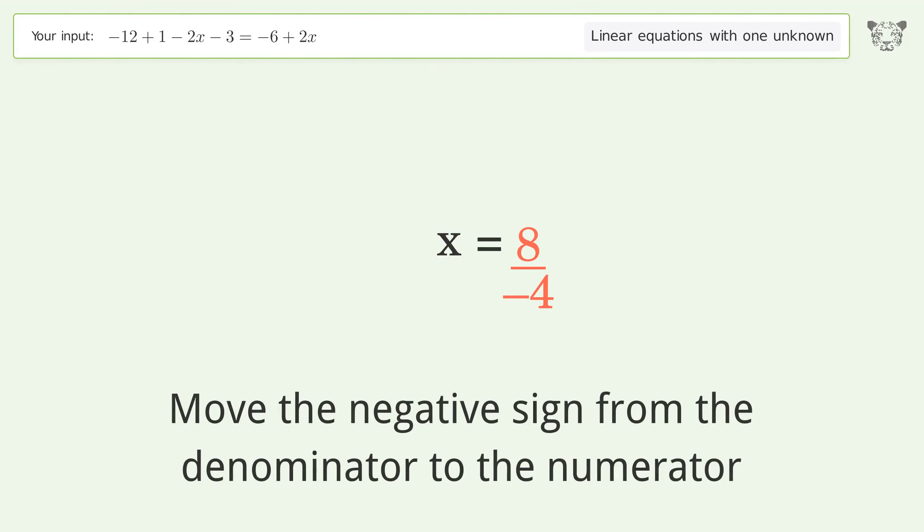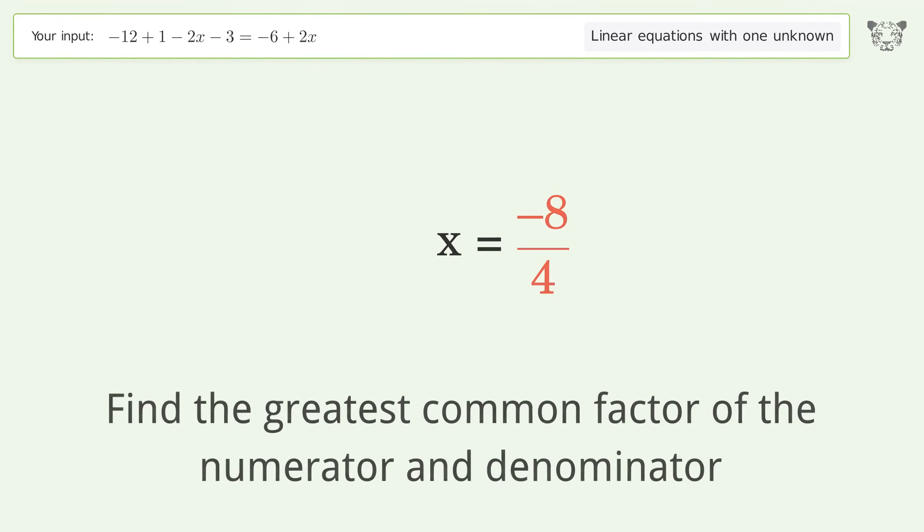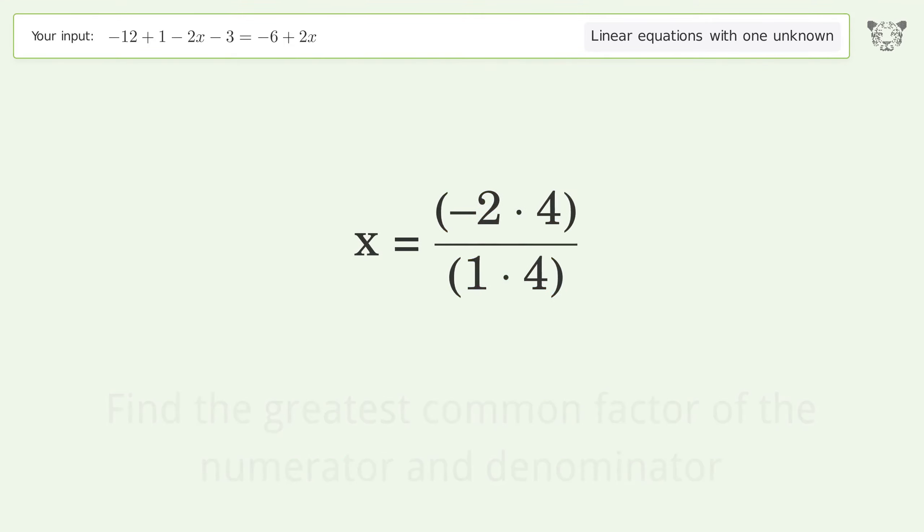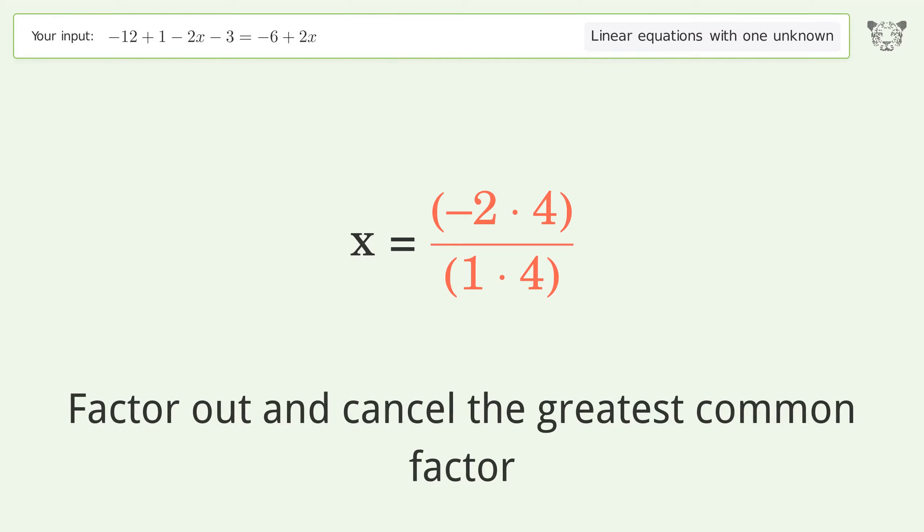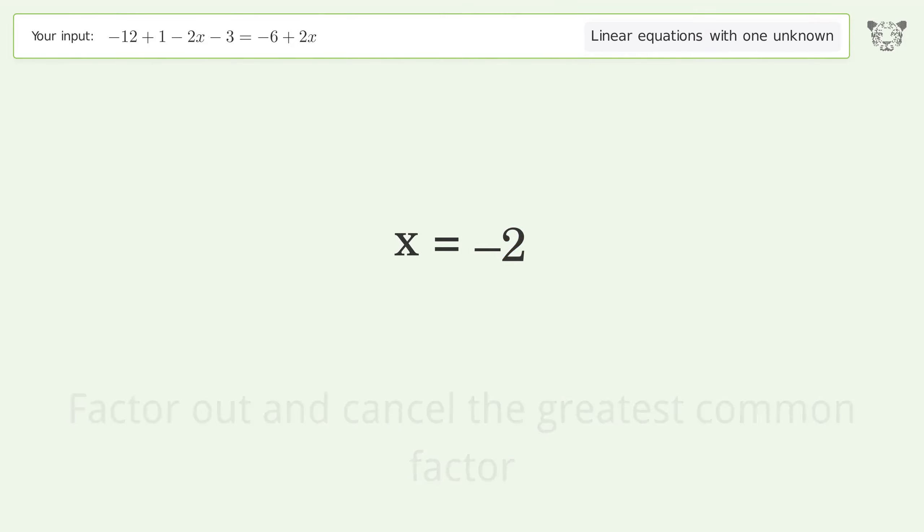Move the negative sign from the denominator to the numerator. Find the greatest common factor of the numerator and denominator. Factor out and cancel the greatest common factor. And so the final result is x equals negative 2.